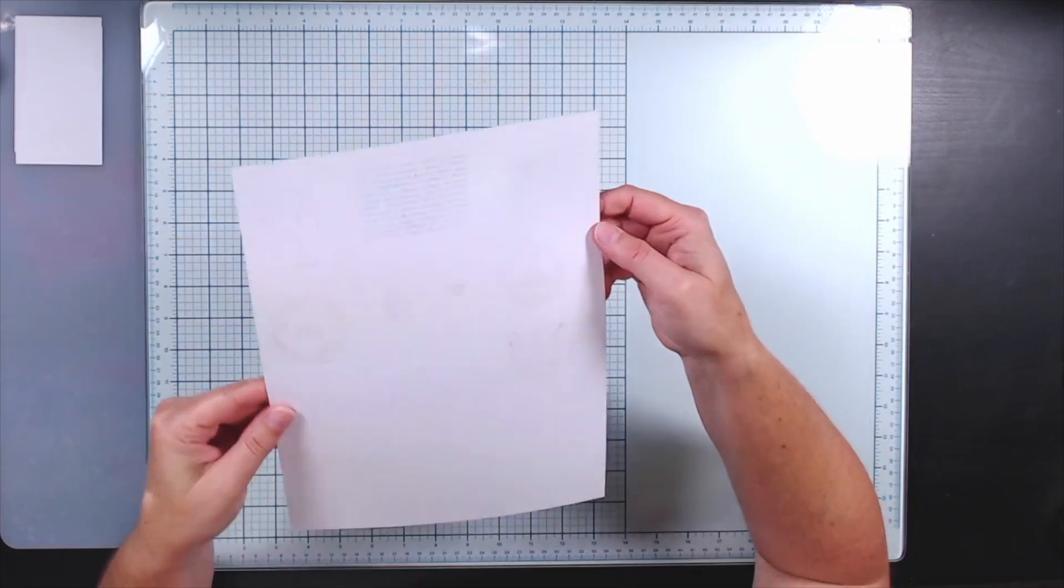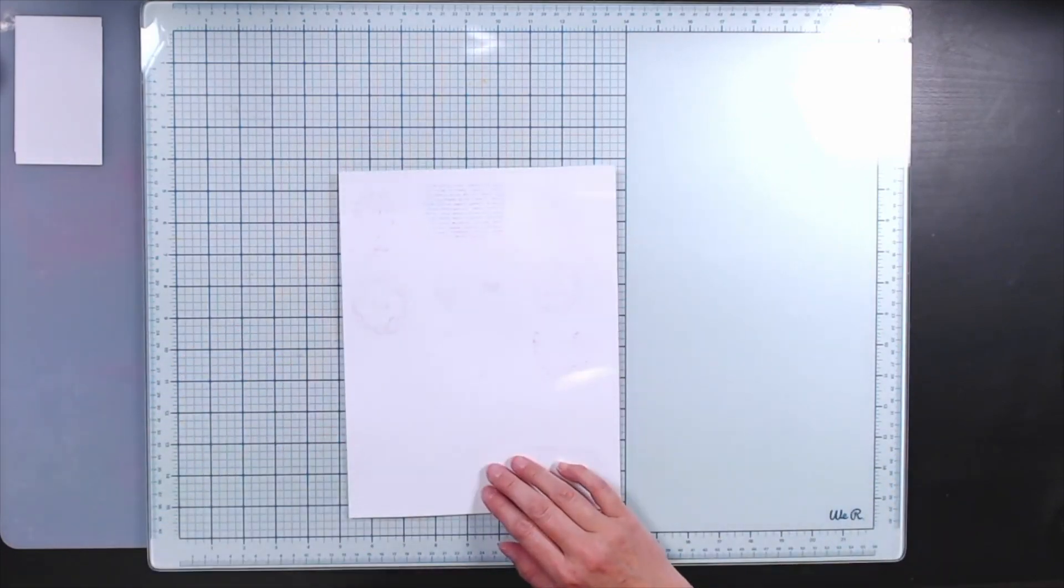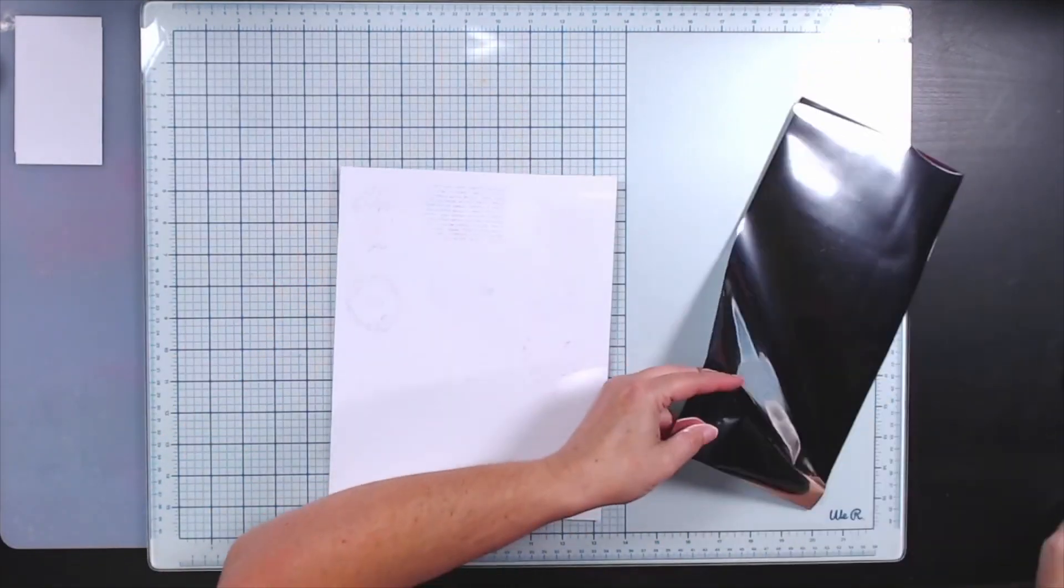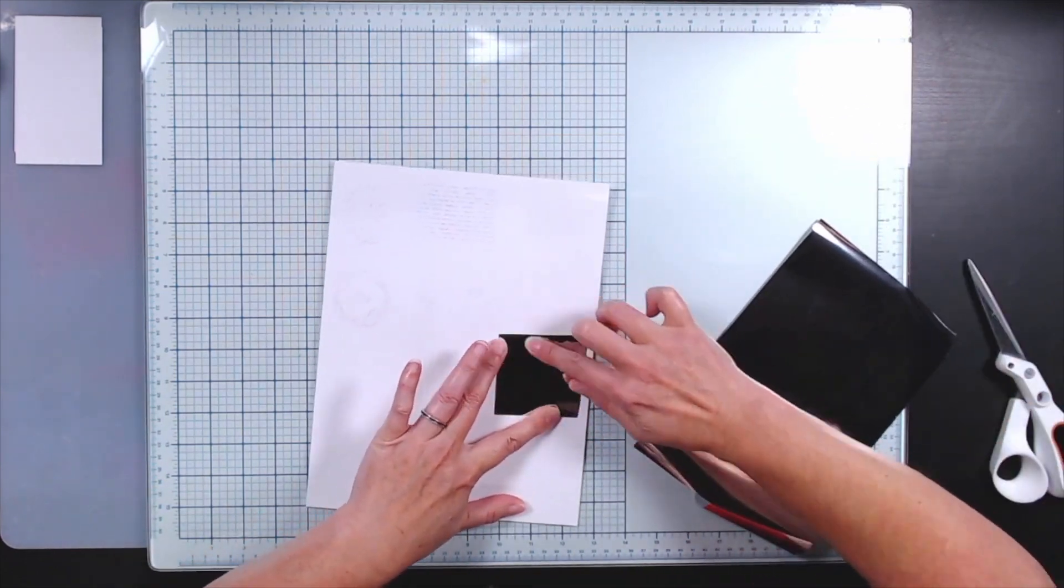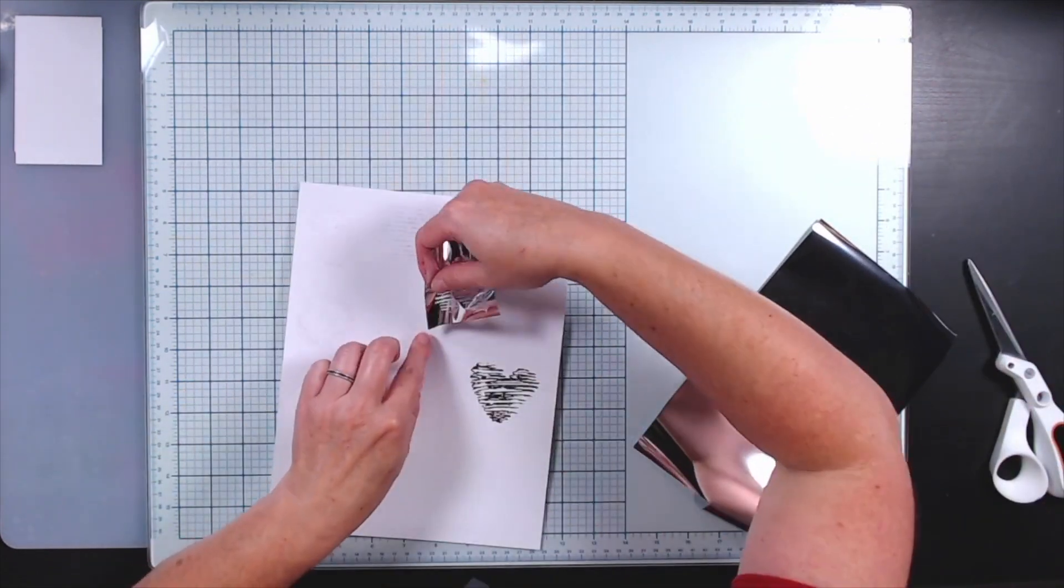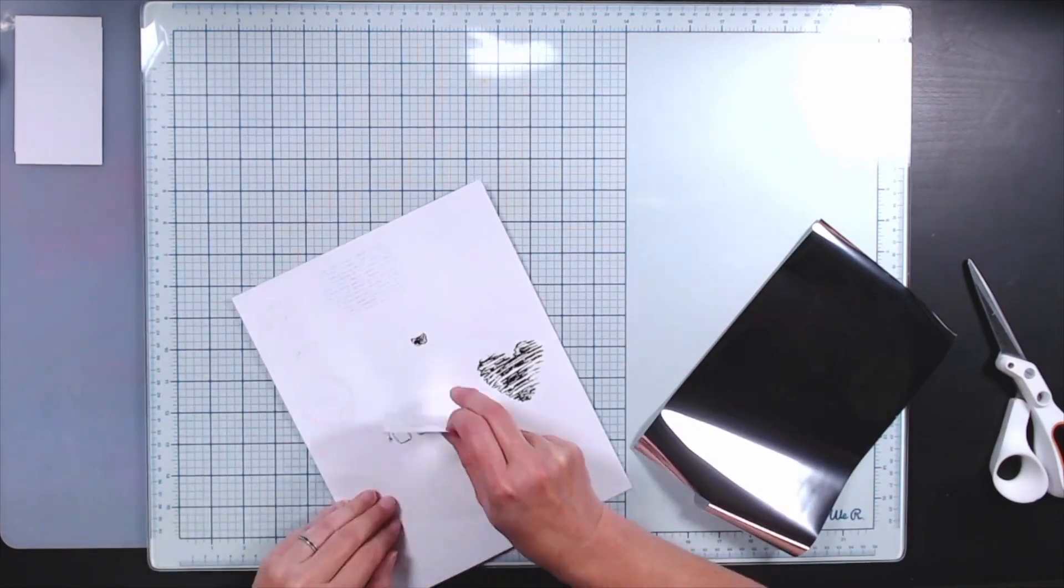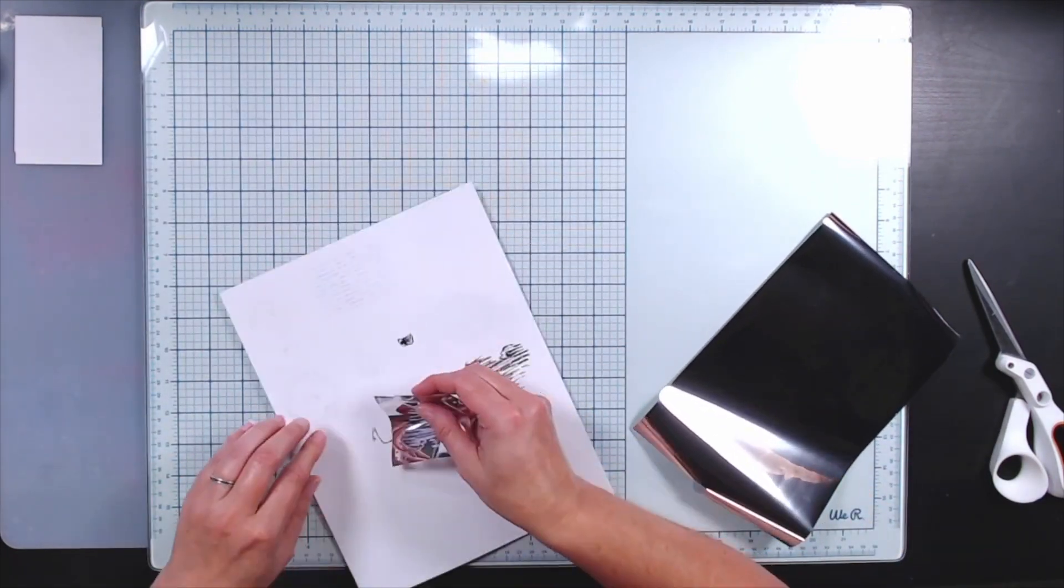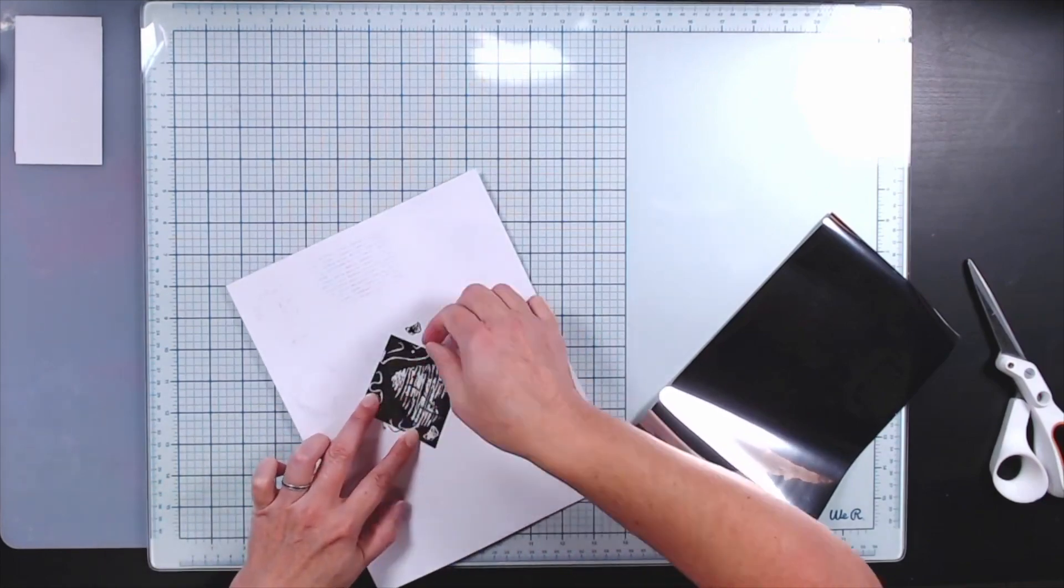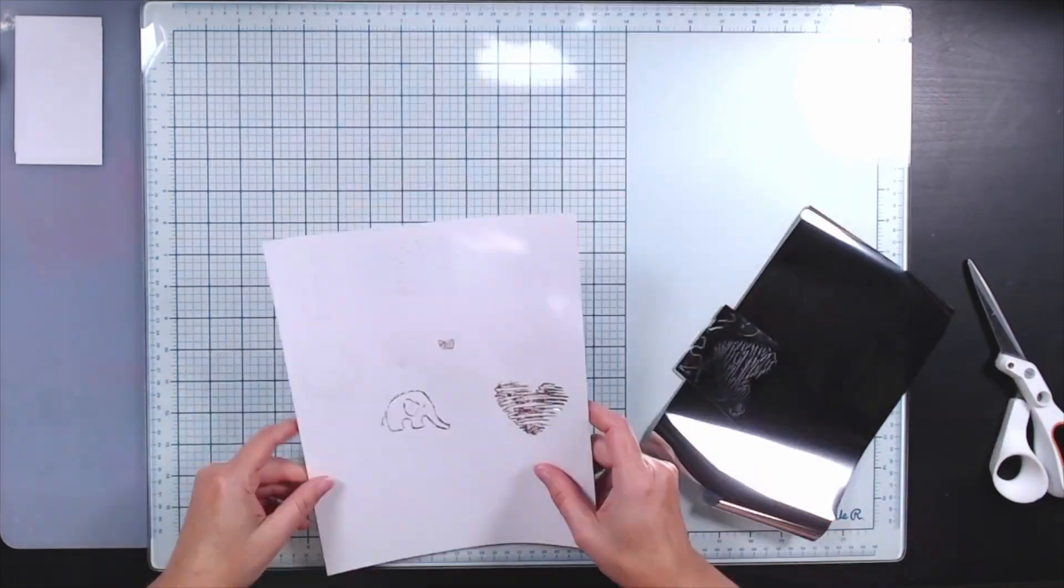Once my project is completely dry, then I can go ahead and start adding the foil. I am going to cut this down into smaller pieces so that I don't accidentally touch it to areas I don't intend to. I'm going to start with a larger image and work my way down to smaller images or outline images where I can use up the bits of excess foil in between other images.